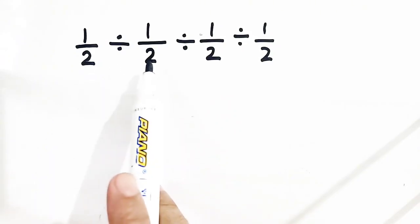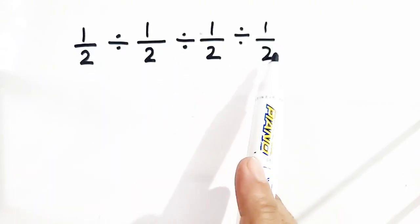The question is 1 by 2 divided by 1 by 2 divided by 1 by 2 divided by 1 by 2.